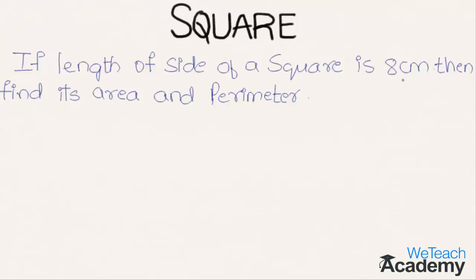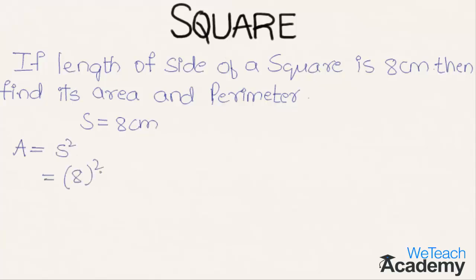We are given that the length of side s = 8 centimeters. We know that the area of a square is given by the formula s². Substituting the value of s, we get 8² = 64 square centimeters.